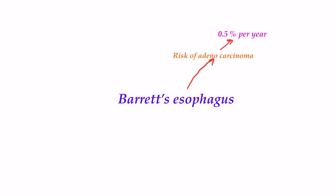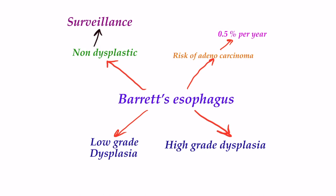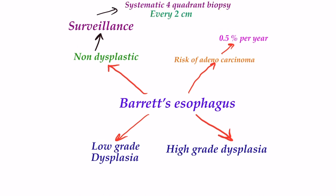Barrett's esophagus once diagnosed is classified as non-dysplastic Barrett's, low-grade dysplasia, or high-grade dysplasia. Non-dysplastic Barrett's esophagus is kept on surveillance with systematic four-quadrant biopsies every two centimeters, with separate endoscopic mucosal resection of mucosal abnormalities, at an interval of one to two years. In case of low-grade dysplasia, aggressive reflux control with PPI and anti-reflux surgery if needed is recommended.